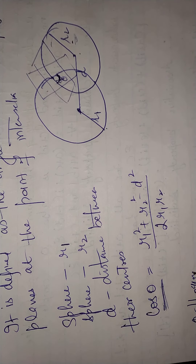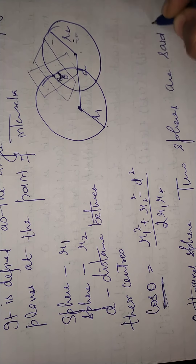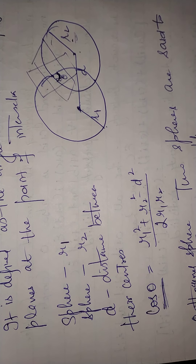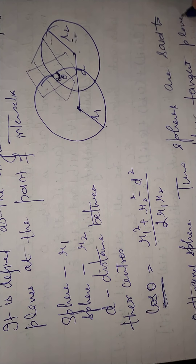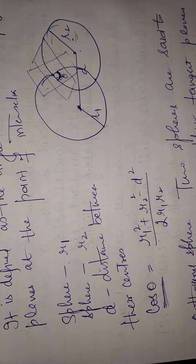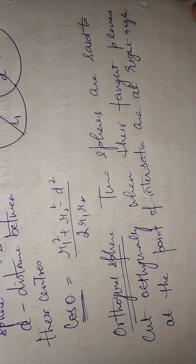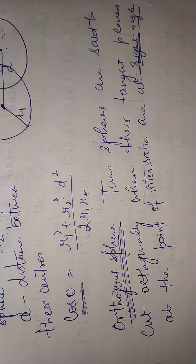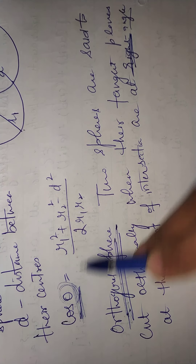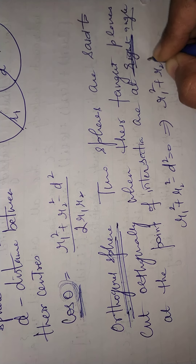The next definition is orthogonal spheres. Two spheres are said to cut orthogonally when their tangent planes at the point of intersection are at right angles. Then we say that the two spheres are cutting orthogonally. The condition to check this: if the angle is 90°, then cos 90° = 0, which means r1² + r2² − d² = 0, that is, r1² + r2² = d².